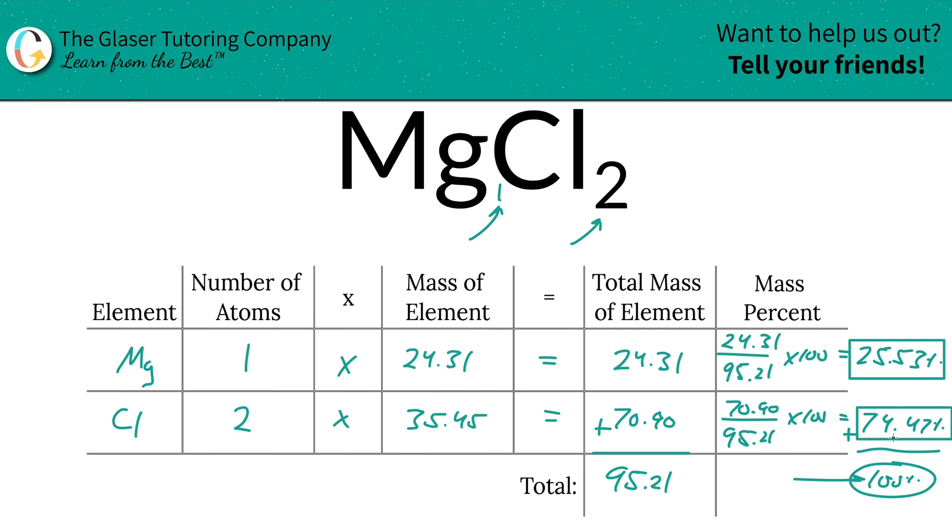And that's all there is to it. Now you know how to find the mass percents of magnesium and chlorine in magnesium chloride. Thanks for watching, I'll see you in the next one.